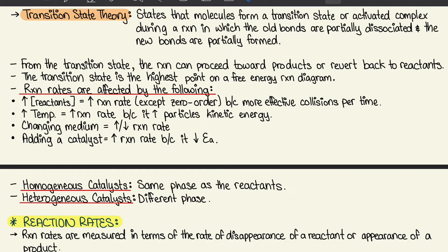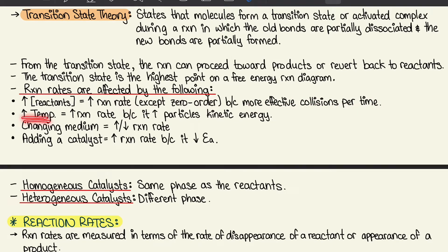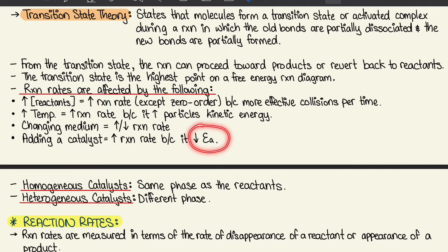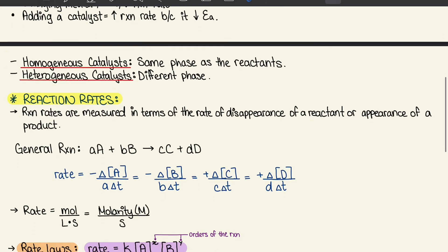The transition state is the highest point on a free energy reaction diagram. Reaction rates are affected by the following: increasing reactants increases the reaction rate (except zero order) because of more effective collisions per time. Increasing temperature also increases the reaction rate because of higher particle kinetic energy. Changing the medium matters too — if molecules flow easily in the medium, that increases the rate, but a thicker medium restricting movement decreases it. Adding a catalyst can also increase the reaction rate because it decreases the activation energy required.